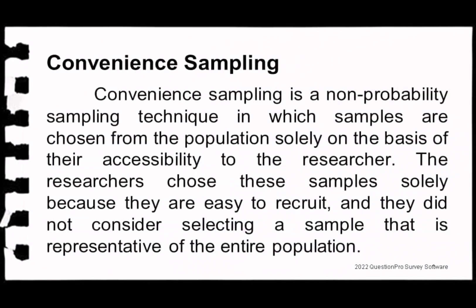Convenience sampling is a non-probability sampling technique in which samples are chosen from the population solely based on their accessibility to the researcher. Researchers choose these samples because they are easy to recruit, without necessarily selecting a sample representative of the entire population. Because of its speed, cost-effectiveness, and ease of availability, convenience sampling is one of the reasons researchers rely on it when populations are too large to examine fully.